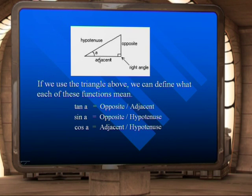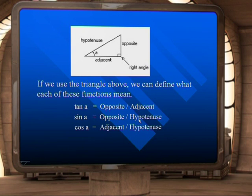So if you use the triangle above, we can define what each of these functions mean. Tan of angle A is equal to opposite divided by the adjacent. Sin A is equal to opposite over hypotenuse. And cos A equals adjacent over hypotenuse.